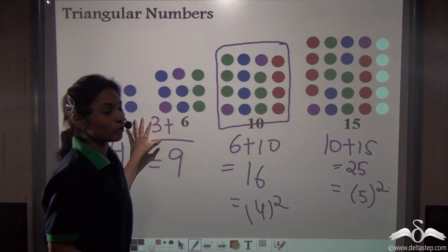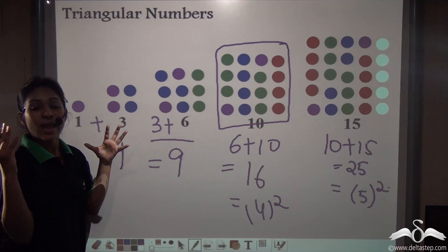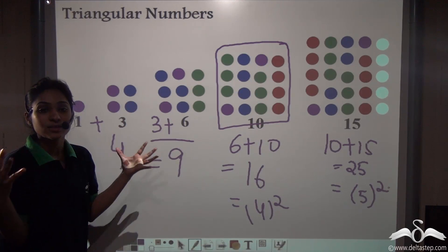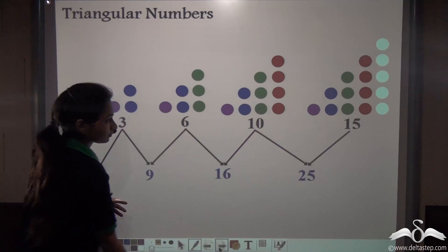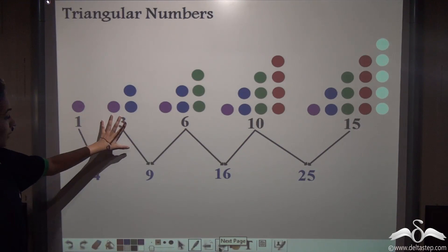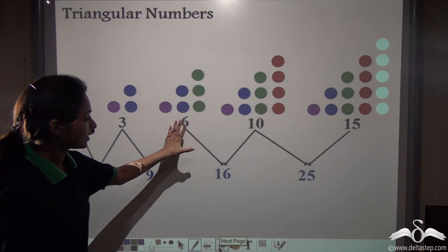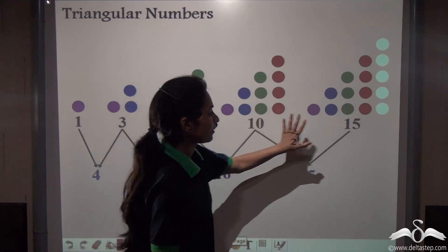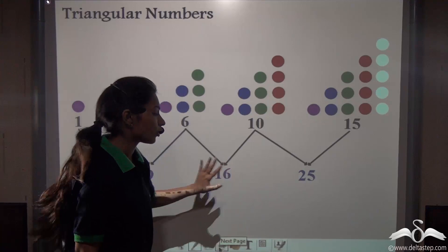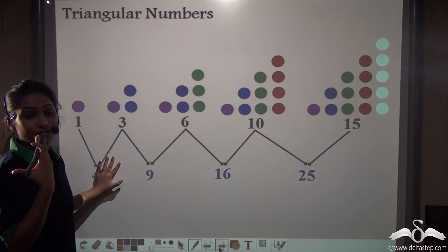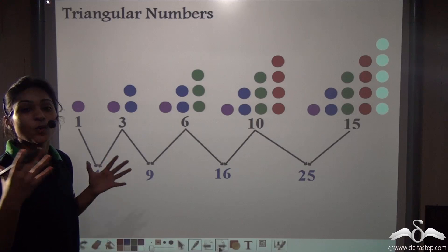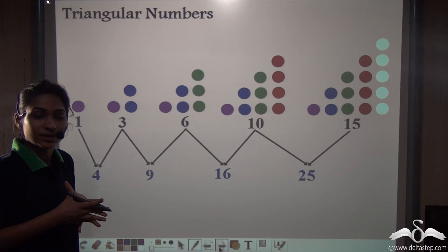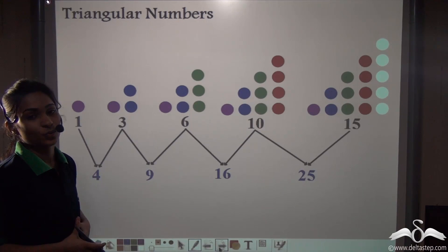So, this is how triangular numbers, they say, any two consecutive triangular numbers, they combine to form perfect squares. So, you can see, one plus three gives us four. Three plus six gives us nine. Six plus ten, sixteen. Ten plus fifteen, twenty-five and they are all perfect squares. So, this is a very interesting fact about the triangular numbers, which when any two consecutive triangular numbers are added, give us perfect squares.